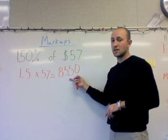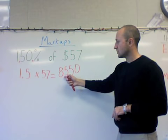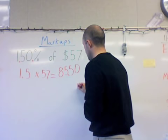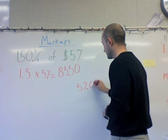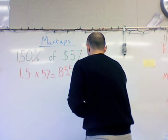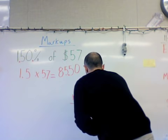So if we figured out that 150% of $57 is $85.50, what I want to do now is take this $85.50 and add it to our original price of $57. Then we're going to find out what the true markup price is. I'll put a decimal at the end of $57 and add two zeros — it still says $57 — and we want to add that to $85.50. Now if we add this up, we end up with a total of $142.50.